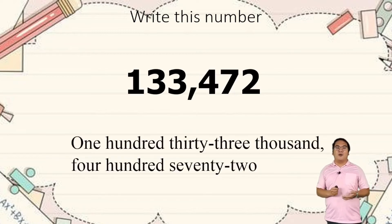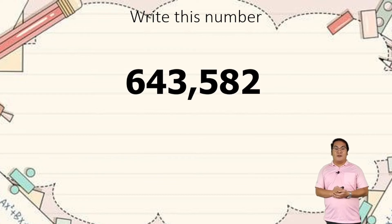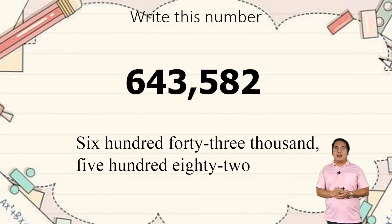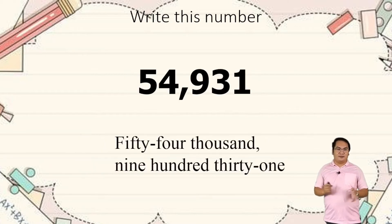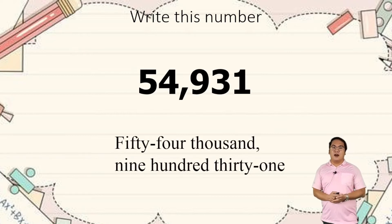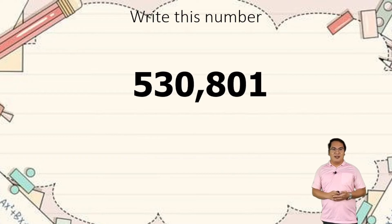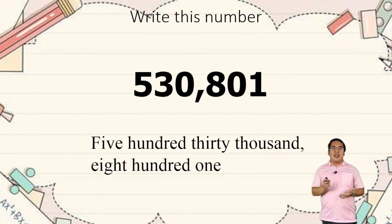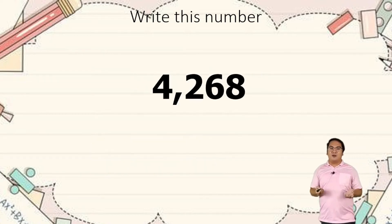How about this number — how are we going to read it? We can say six hundred forty-three thousand, five hundred eighty-two. How about this one? We have here five hundred thirty thousand, eight hundred and one.